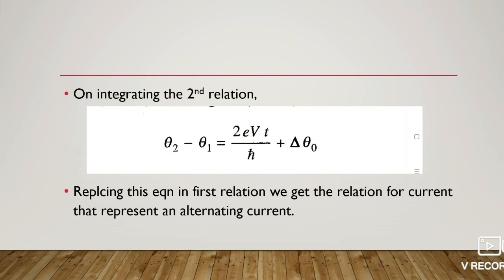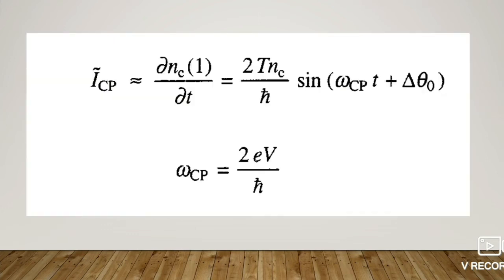we obtain the relation for current that represents an alternating current: Icp = ∂nc(1)/∂t = (2Tnc/ℏ) sin(ωcp·t + Δθ₀), where ωcp = 2eV/ℏ.